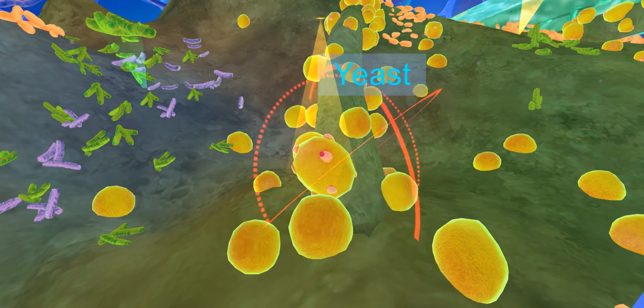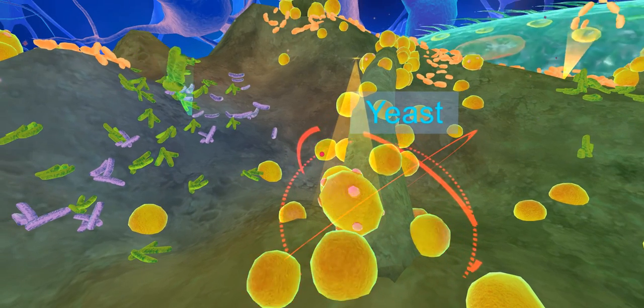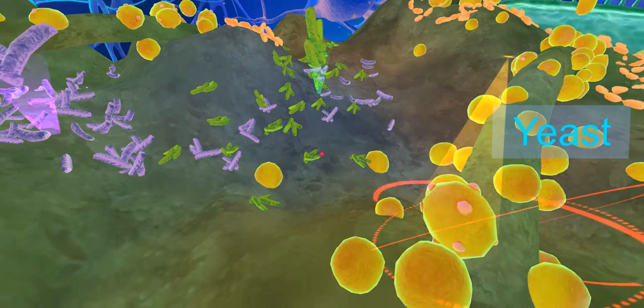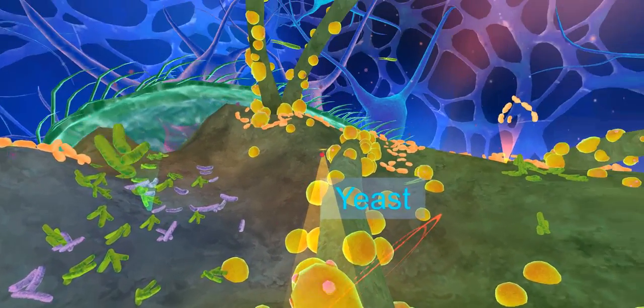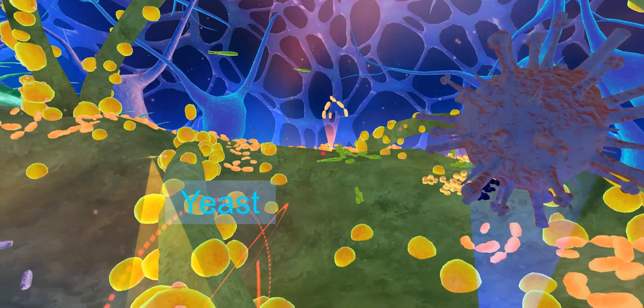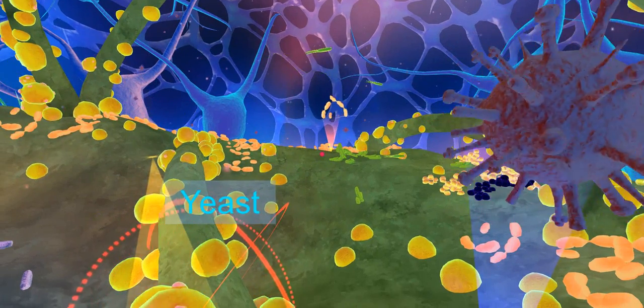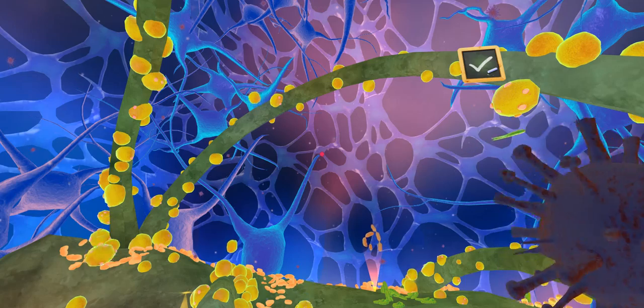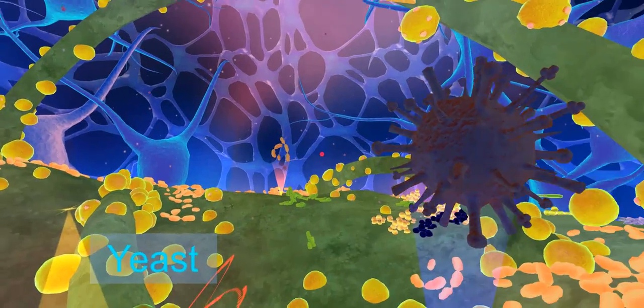Varieties of yeast are found on our skin, in the air, and on the skins of fruits and vegetables. Yeasts, microbes, are probably the earliest domesticated microorganisms in human civilization history.